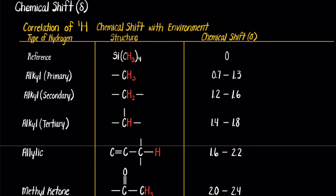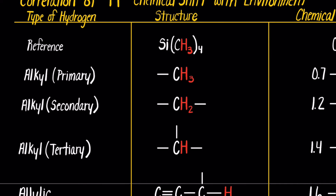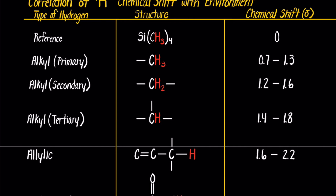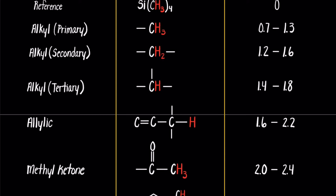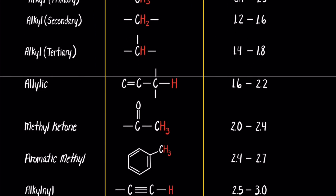The last thing we're going to cover before we do a practice problem is the chemical shift table of values — the correlation of H1 chemical shift with environment. This is not the carbon-13 chemical shifts; that is a different video. The reference peak is always going to be TMS at zero chemical shift. Everything is going to be downfield from there. As we look through, we see primary carbons, secondary carbons, tertiary carbons, and allylic hydrogen atoms. Keep in mind we're referring to the hydrogen atoms and the chemical shifts correlated with those structures.